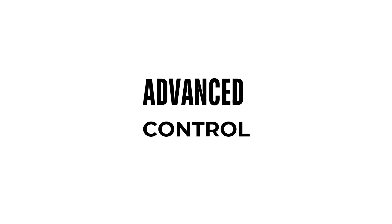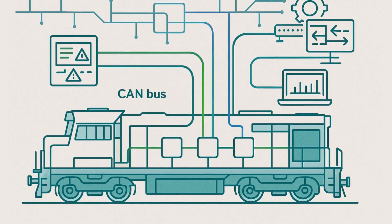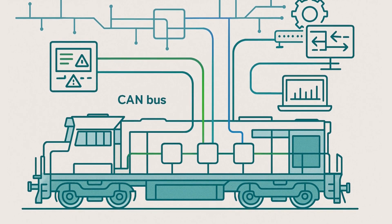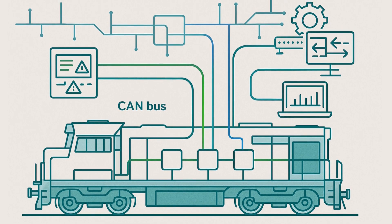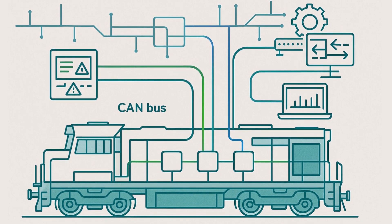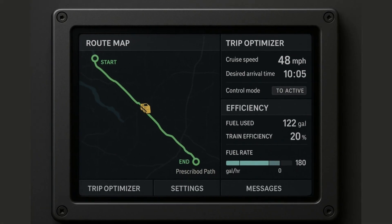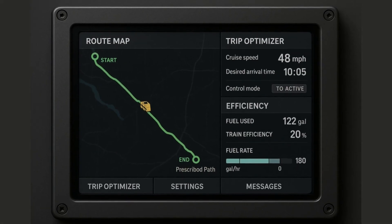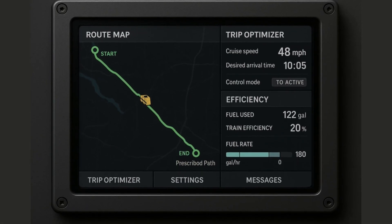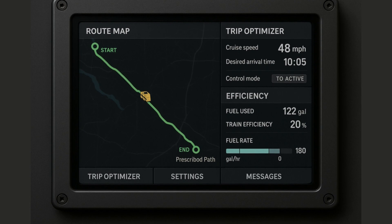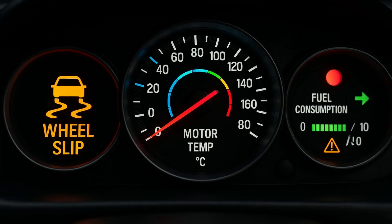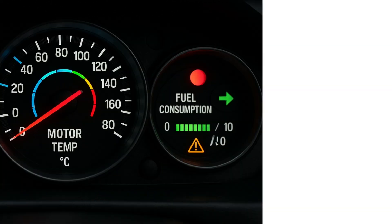Current locomotive control systems feature CAN bus architecture for internal component communication and ethernet-based networks for consist-level data exchange. These systems monitor hundreds of parameters including wheel slip, motor temperature, fuel consumption, and emissions output. Trip optimization systems use GPS data, track profiles, and consist characteristics to calculate optimal speed and power settings, reducing fuel consumption by three to six percent while maintaining schedule adherence.